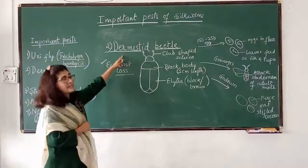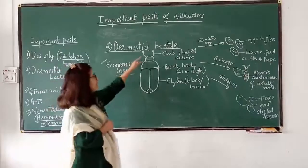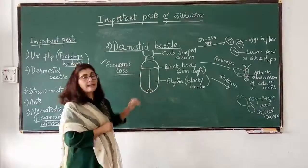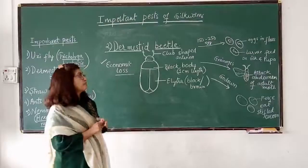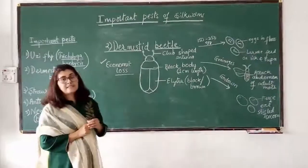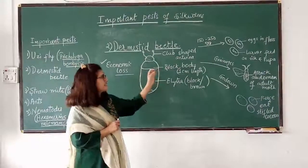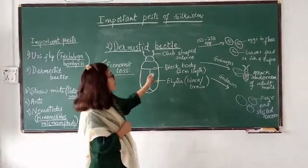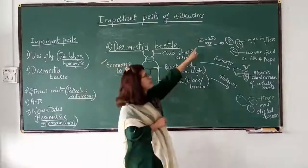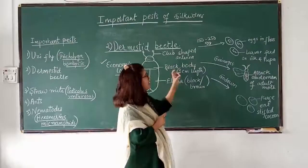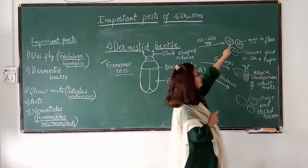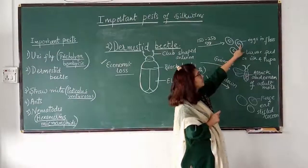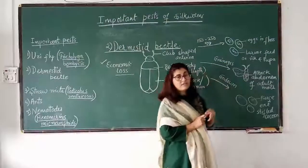The second pest is the domestic beetle. This beetle has a club shape and a small body, about 1 cm in length. Body colour is black, glittery black, or brown. To understand the economic loss caused by the domestic beetle, we need to know how it affects the industry in three different ways. First, the female domestic beetle can lay 150 to 250 eggs. She lays one or two eggs in the floss of the cocoon. Larvae emerge from the eggs and feed on the silk of the cocoon, thus destroying it.